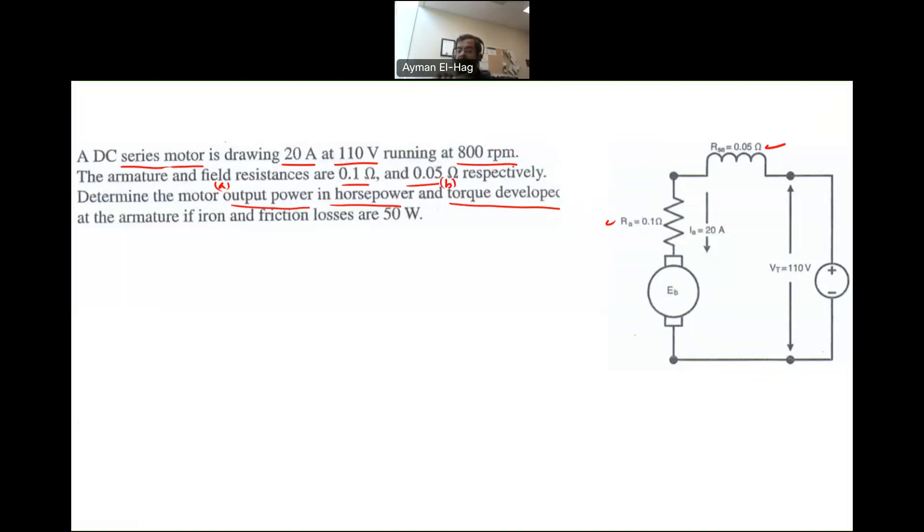Not the output torque. So there is a difference between the two, developed torque and output torque. And we are given the iron or core and magnetic circuit and friction losses are 50 watt. The two losses together is 50 watt.